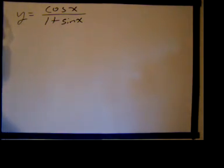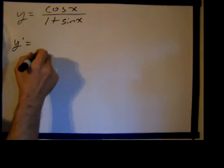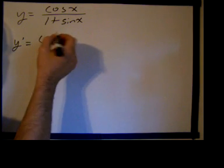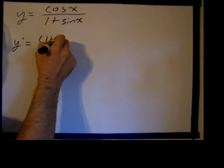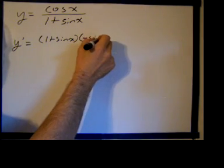We have a quotient, so we're going to use the quotient rule. We'll say y prime equals the bottom function, or the function in the denominator, so that's 1 plus the sine of x, times the derivative of the numerator, which is the negative sine of x.